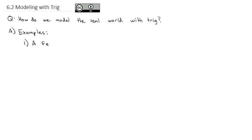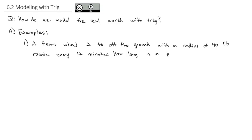A Ferris wheel two feet off the ground with a radius of 40 feet rotates every 12 minutes. How long is a person above 35 feet in one rotation?